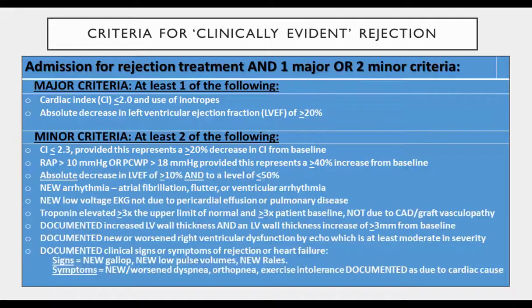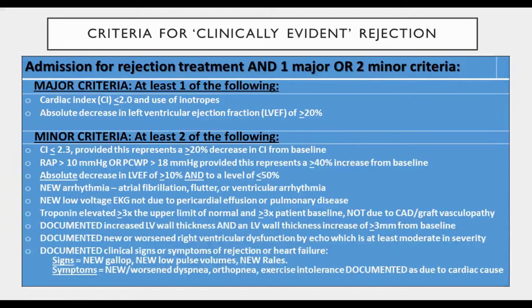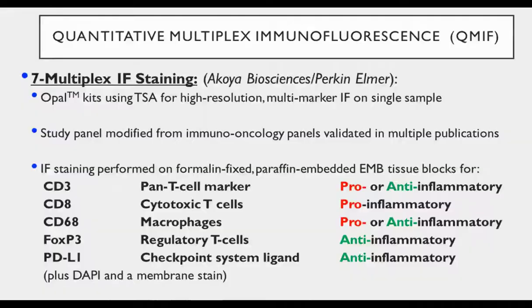In terms of the criteria used to define clinically evident rejection, we used criteria modified from prior efforts in heart transplantation medicine. Briefly, patients must be admitted to the hospital, must undergo rejection-directed therapy, and must meet either one major or two minor criteria, which are derived from invasive hemodynamics, echocardiograms, EKGs, and clinical presentation. These criteria have been used in several NIH grants and have been endorsed by leaders in transplant across the country.